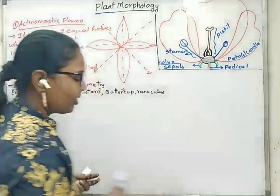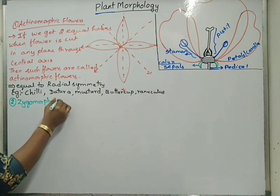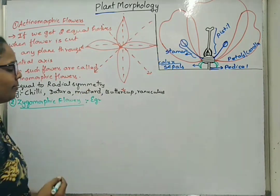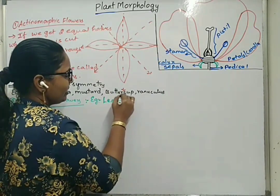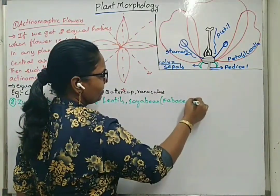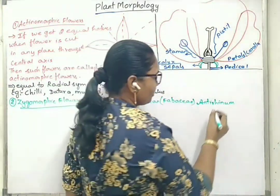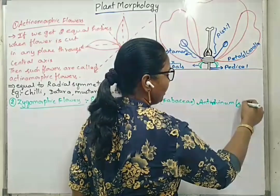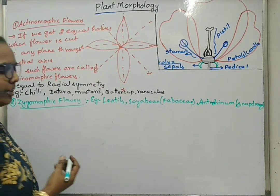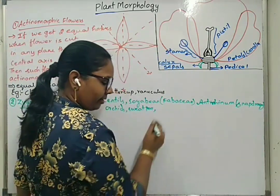The other one is zygomorphic flowers. Examples we can write first like lentils, soya beans — if we come to family, we can write under Fabaceae members. Next, antirrhinum, which we commonly call snapdragon. Next, orchids, sweet pea, and so on.